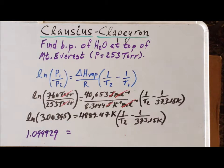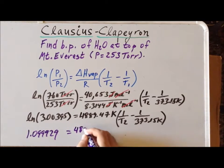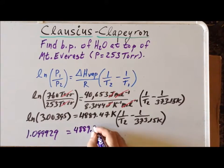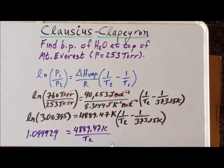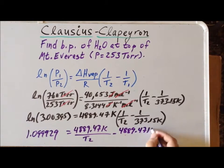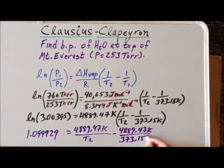Now I can distribute this expression over the two terms on the right-hand side, so that gives me 4,889.47 Kelvin divided by T₂ minus 4,889.47 Kelvin divided by 373.15 Kelvin. And then we're going to notice that the units of kelvin will cancel for the fraction on the right-hand side.